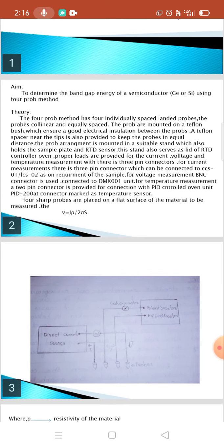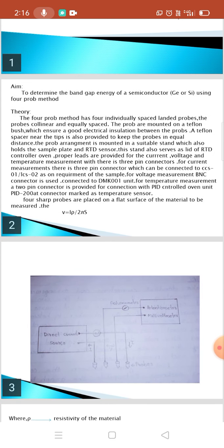The aim of the experiment is to determine the band gap energy of a semiconductor germanium silicon using the 4-probe method. Now let us explain the theory. The 4-probe method has four individually spaced Telland probes. The probes are collinear and equally spaced.